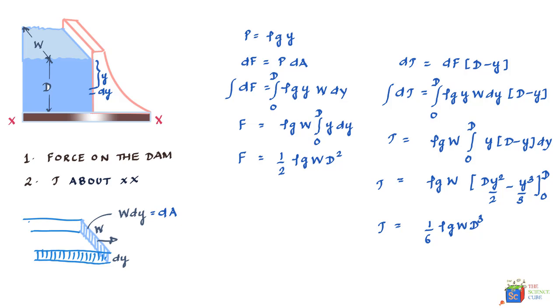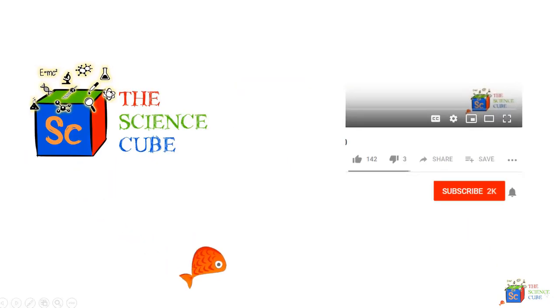So the value of torque which is caused along line xx due to water, which in fact tries to turn the dam or twist the dam and causing it to fail, is equal to one sixth ρgw d cubed.